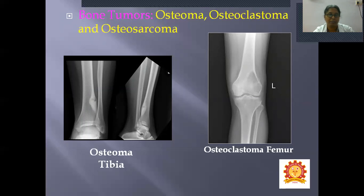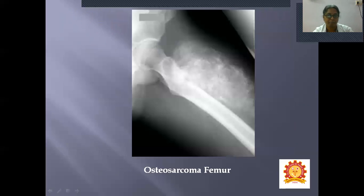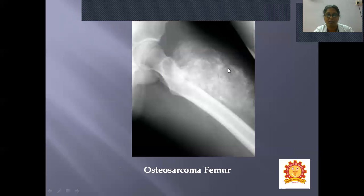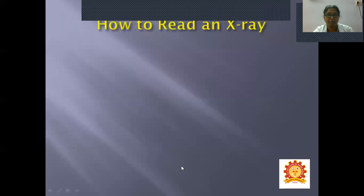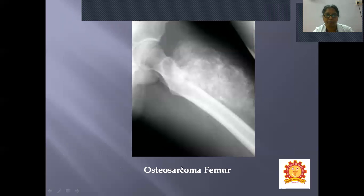Fifth use: to confirm bone tumors — such as osteoma, osteoclastoma, and osteosarcoma, which may be benign or malignant. Osteoma is seen in the tibia, osteoclastoma at the lower end of the femur, and osteosarcoma of the femur involves both the bone and surrounding muscle.